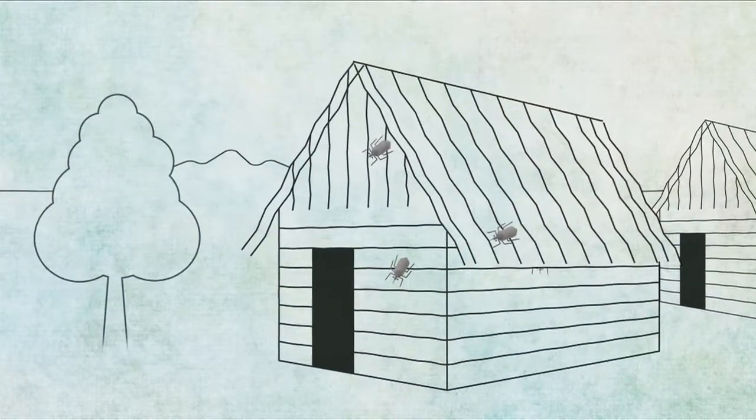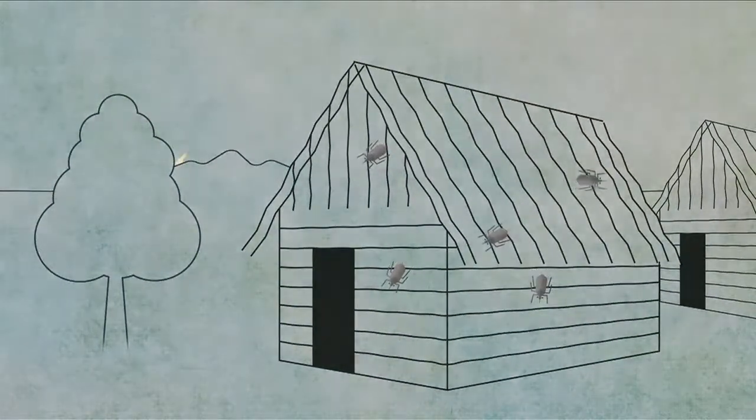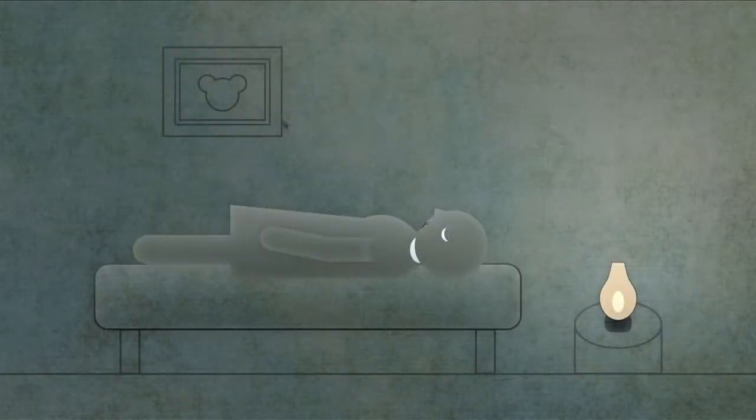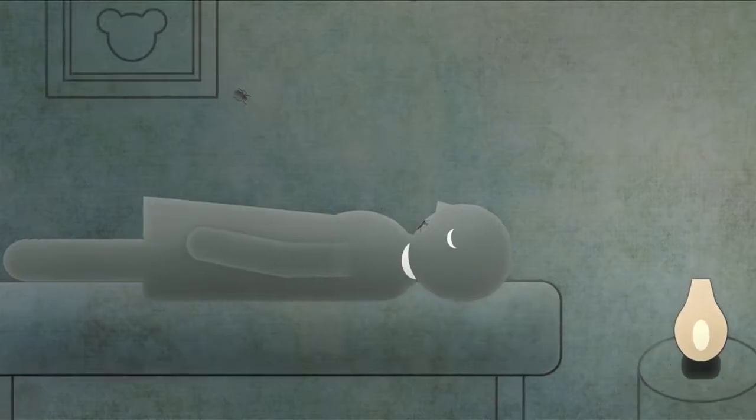The bug hides between stones in the walls of houses and under straw roofs. During the night, the Vinchuca comes out of hiding to feed on human blood.